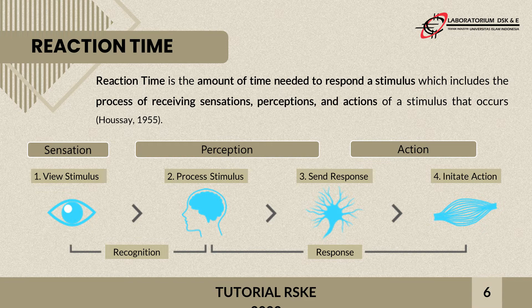When viewed from the chart on the screen, it can be seen that the recognition process is carried out in the five senses and then transmitted to the brain. Furthermore, the response process starts from the nerves that receive information from the brain, and then the information is forwarded to action, or usually called feedback from certain stimuli.